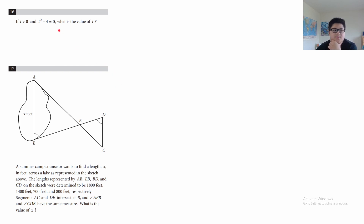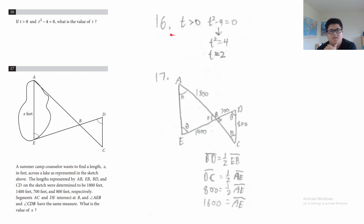Question 16: if t > 0 and t² − 4 = 0, what is the value of t? Add 4 to both sides to get t² = 4, then take the square root: t = 2 or t = −2. Since t must be greater than 0, t = 2.